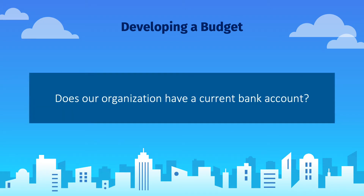Does your organization have a current bank account? This can be either an on-campus account through the university or an off-campus account at a private bank like Chase, PNC, Wintrust, etc. If you have an account, how much money is currently in there? Do you have access to it? If you don't have a current account, do you need to establish one? Information about financial accounts can be found in the Student Organization Handbook. If you have any questions, you can contact OSI at studentorgs@depaul.edu.